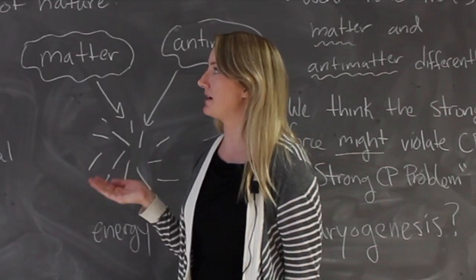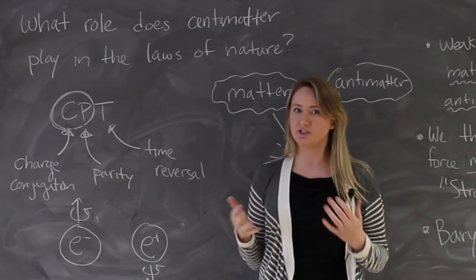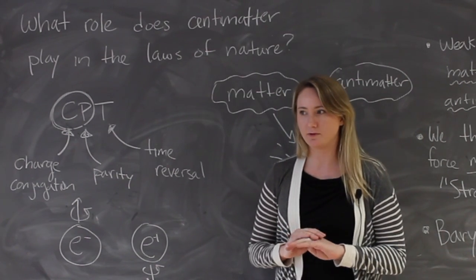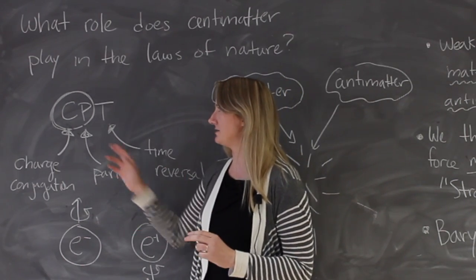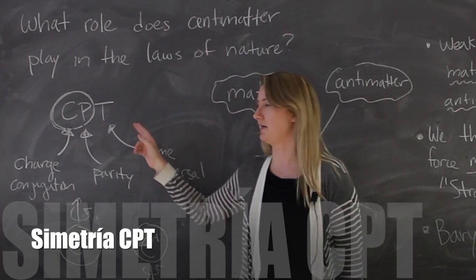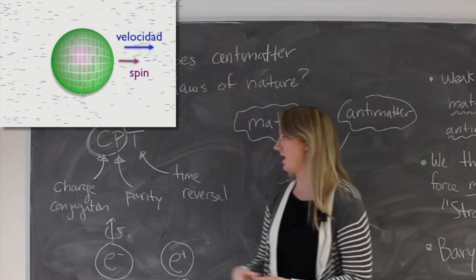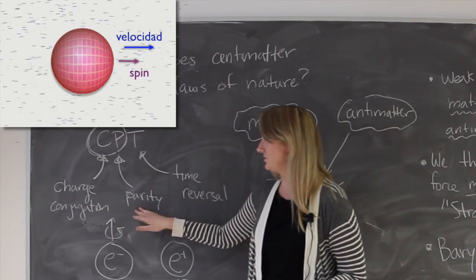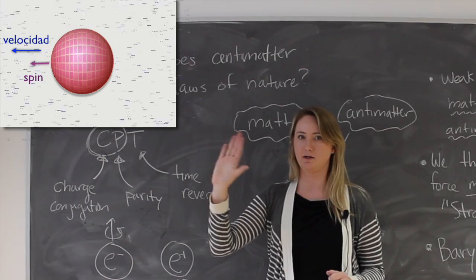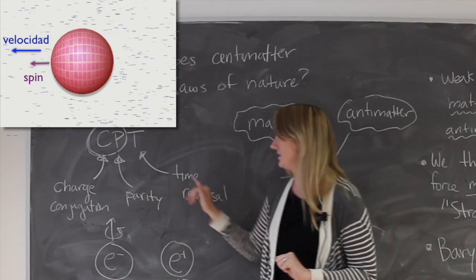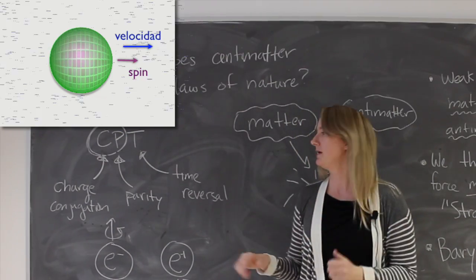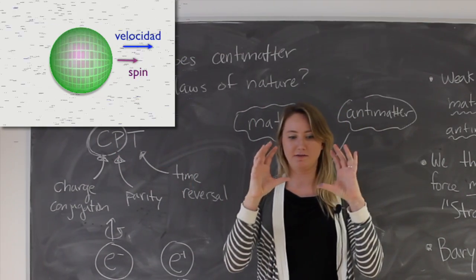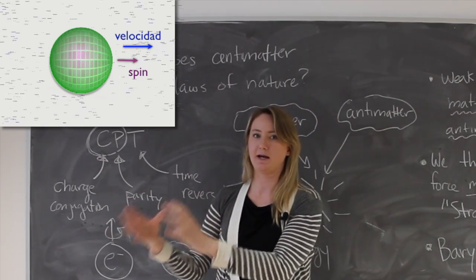We know from very general assumptions that our laws of nature should maintain something we call CPT invariance. That means if you take a system and do charge conjugation, then parity flip (take things that are right-handed and make them left-handed), and then time reversal (run the system backwards in time), if you do all three of these things, the laws of nature should treat the original system exactly the same way as the new system.